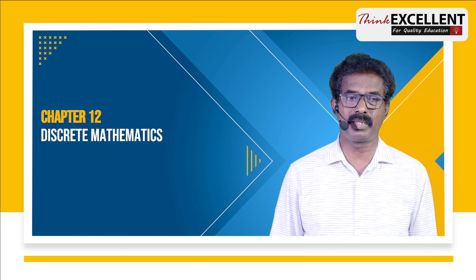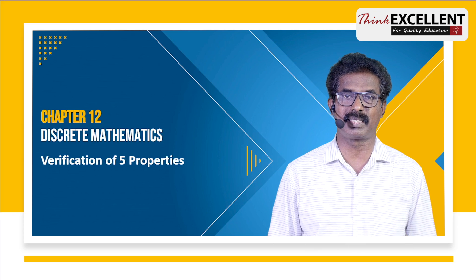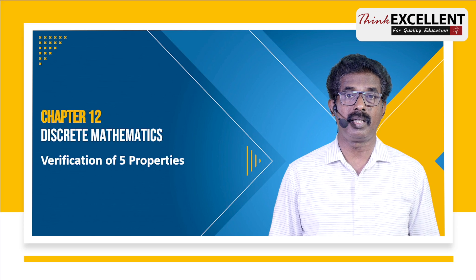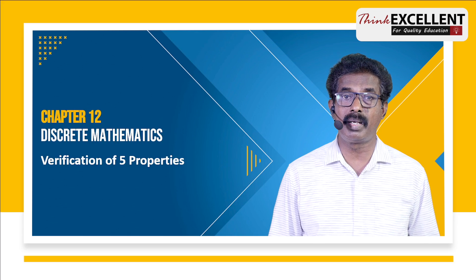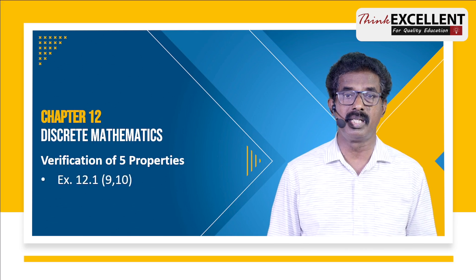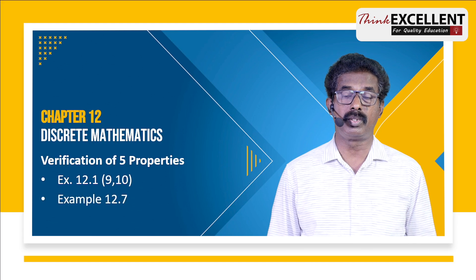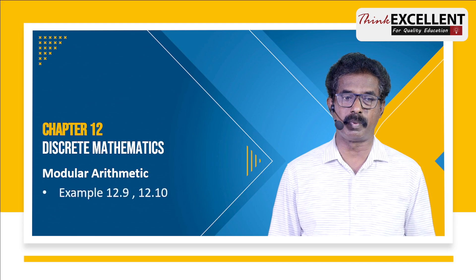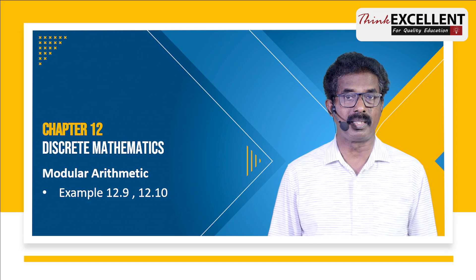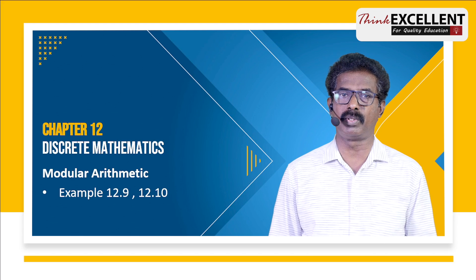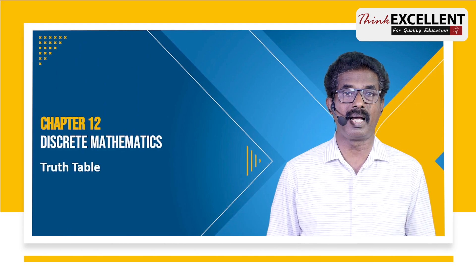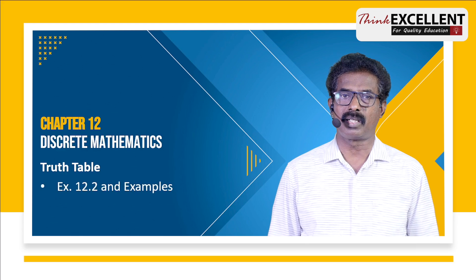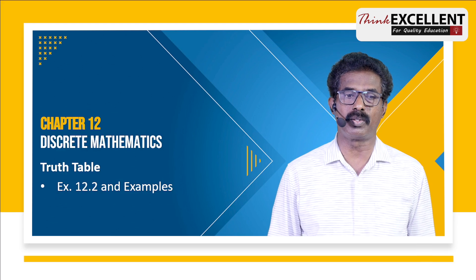The last chapter: Discrete Mathematics. First, binary operations and the five properties — closure property, commutative property, associative property, existence of identity element, and existence of inverse. Verify these properties in exercise 12.1, questions 9 and 10, and example 12.7 — very important because of modular arithmetic. Study addition and multiplication modulo tables, for example modulo 10 and modulo 5. Then truth tables — tautology, contradiction, and contingency. Don't leave any question.